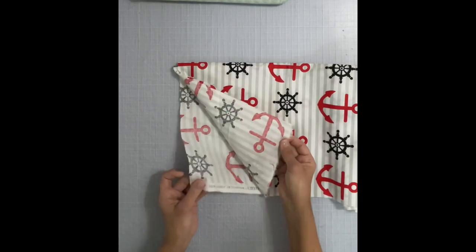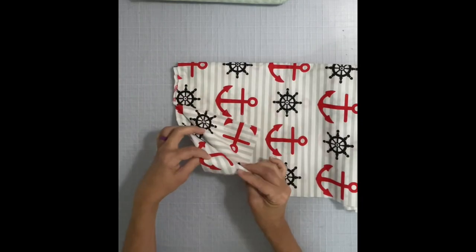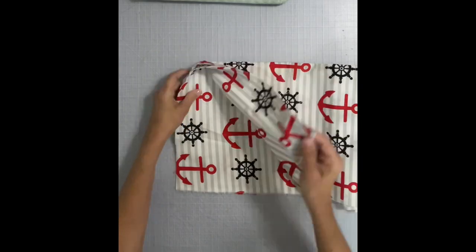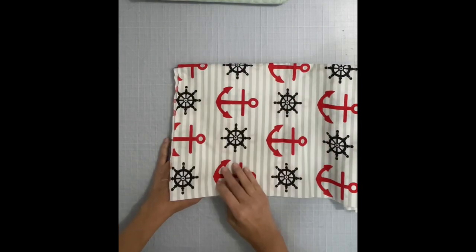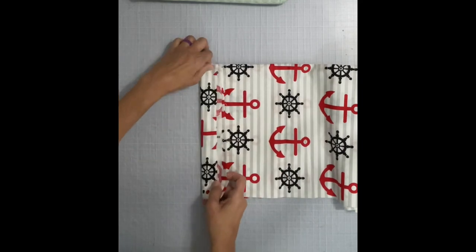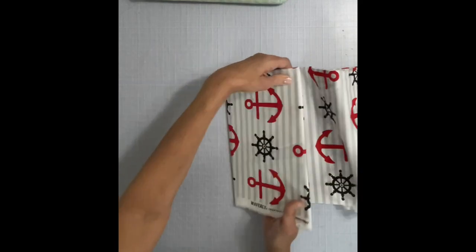Put the selvages together and fold the fabric in half. Then slide your board up in between those two pieces. You're going to fold about two inches or so over and keep folding.